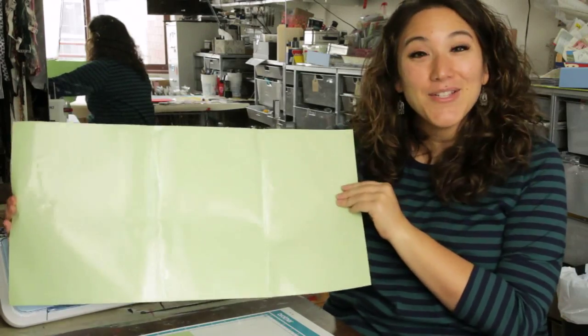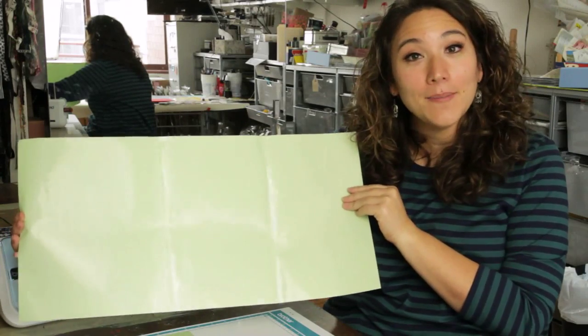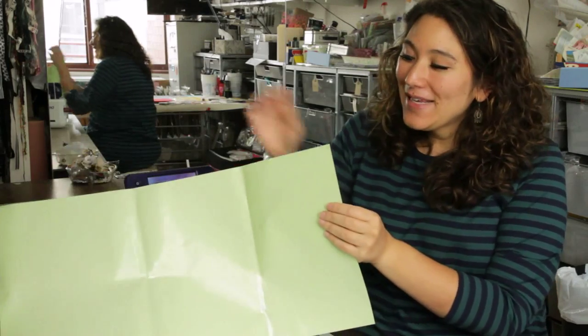This is the stencil material and as you can see it comes in a big 12 by 24 inch sheet which when you get it comes all rolled up and it's not actually green.